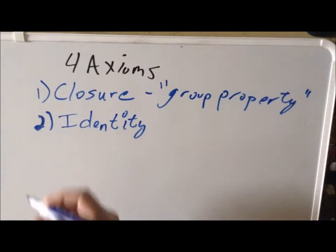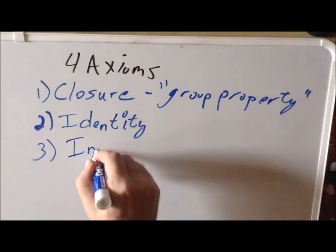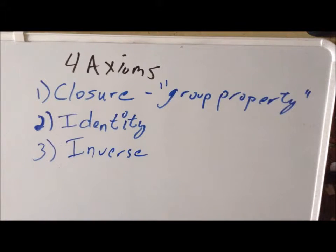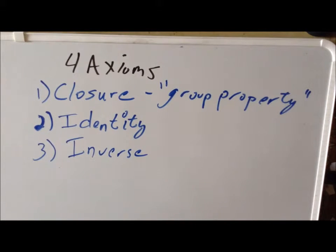The third axiom is that I need an inverse. An inverse is an element which, multiplied with a given element, gives me back the identity. For example, in addition, the inverse of positive five would be negative five, since negative five plus positive five gives zero — the identity for addition. In multiplication, the inverse of five is one-fifth, because one-fifth times five gives one, the identity for multiplication.